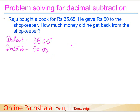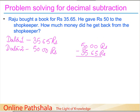We subtract: shopkeeper received 50 rupees, book cost 35.65. Starting from the rightmost — 0 minus 5 requires borrowing. Since this column is also 0, we borrow further up from 5, which becomes 4. After cascading borrows: 10 minus 5 is 5, 9 minus 6 is 3, 9 minus 5 is 4, and 4 minus 3 is 1. So the shopkeeper gives back 14.35 rupees to Raju.